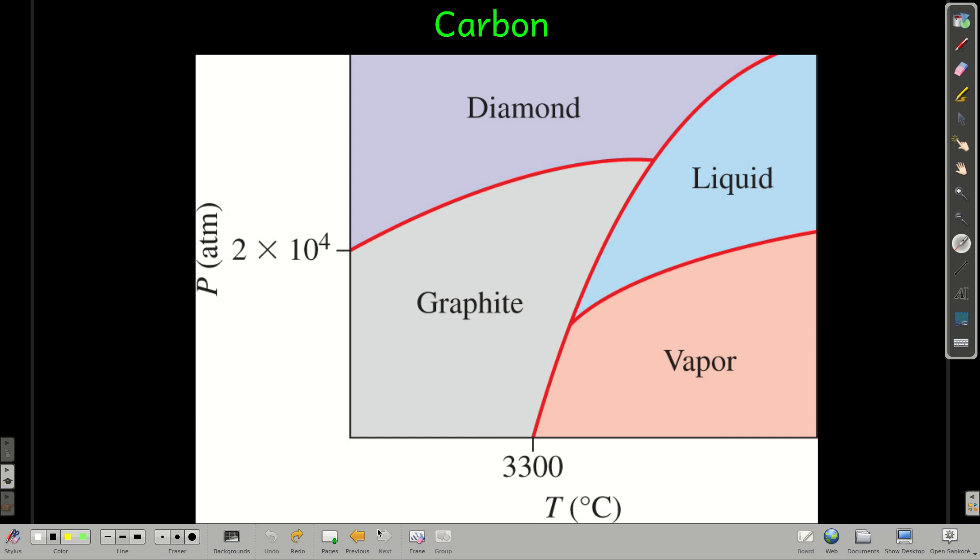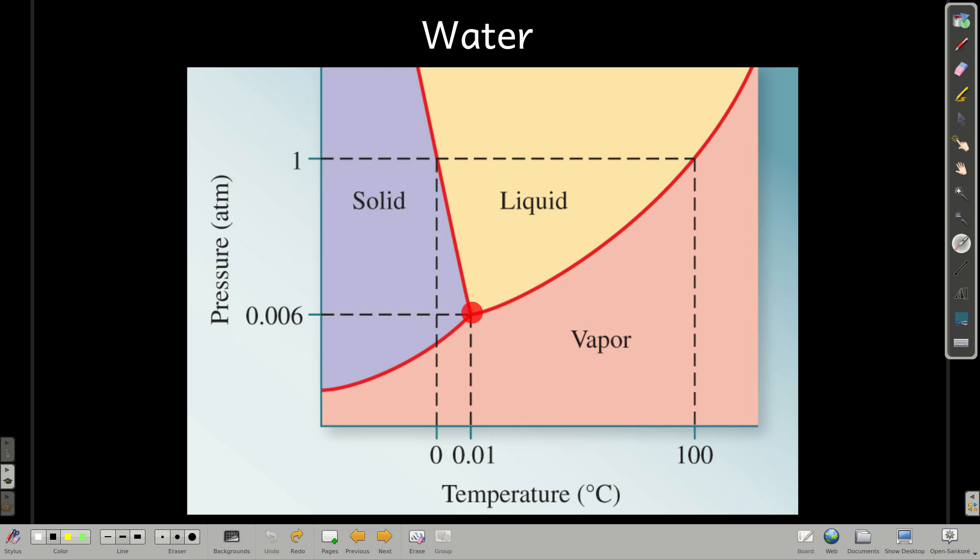So, remember, for a phase diagram, you should know what the triple point is, right there. You should know what the critical point is, you can't see it here, but it's up here. You should know what happens as you change either the pressure or the temperature, how you can go from one phase to the other.